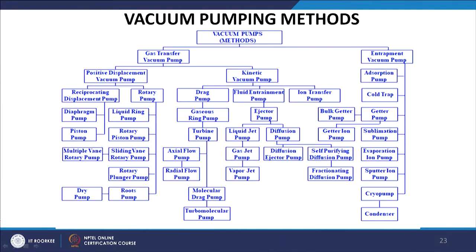This chart shows different kinds of vacuum pumps. All vacuum pumps can be broadly classified as gas transfer vacuum pumps and entrapment vacuum pumps. Gas transfer vacuum pumps can be positive displacement vacuum pumps or kinetic vacuum pumps. Positive displacement pumps include reciprocating displacement pumps and rotary pumps. Reciprocating displacement pumps are further classified as diaphragm pumps and piston pumps. Rotary pumps include liquid ring, rotary piston, sliding vane rotary, rotary plunger, roots pump, dry pump, and multiple vane rotary pump.